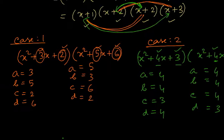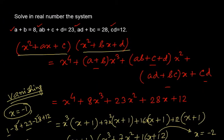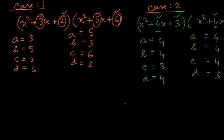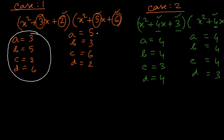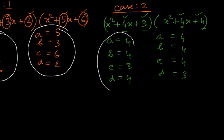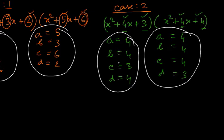So our final answer for this system of real numbers is going to be these four answers. This is one probable set of values for A, B, C, D; this is another; this is another; and this is the final probable set. These are the solutions of the system of equations.